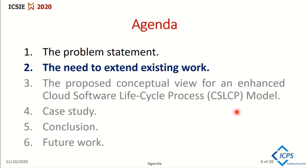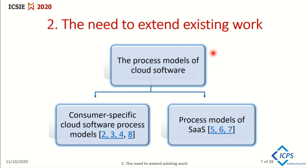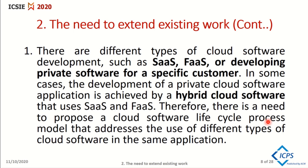The existing work of process models of cloud software can be classified into two classes: consumer-specific cloud software process models and process models of SaaS. The need to extend the existing work is as follows. First, there are different types of cloud software development, such as SaaS and developing private software for a specific consumer. In many cases, the development of a private cloud software application is achieved by hybrid cloud software that uses SaaS and FaaS. Therefore, there is a need to propose a cloud software lifecycle process model that addresses the use of different types of cloud software in the same application.